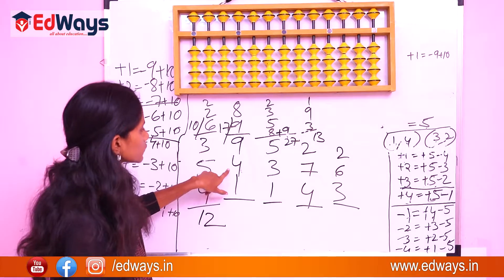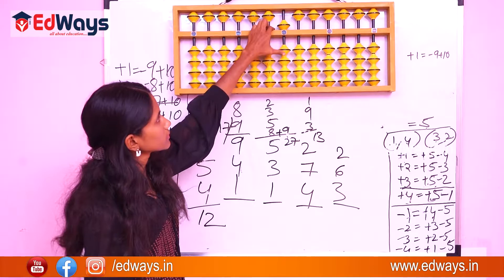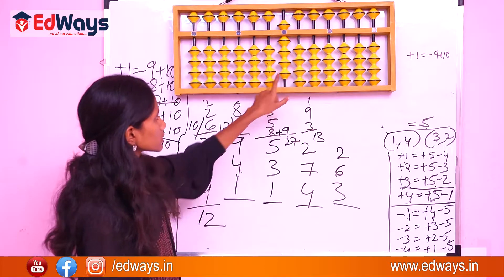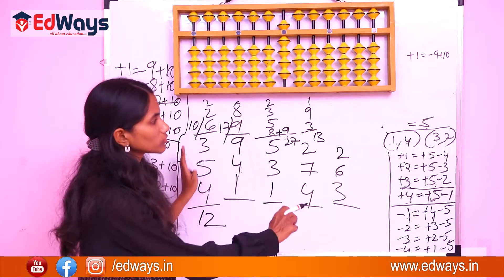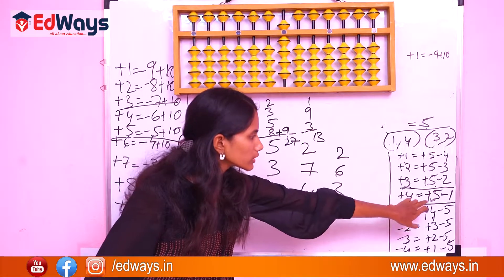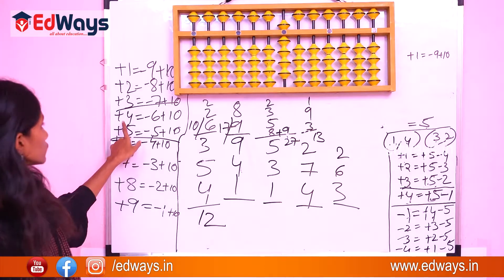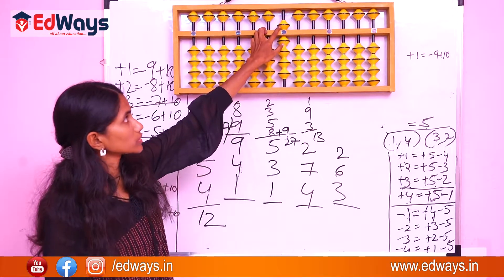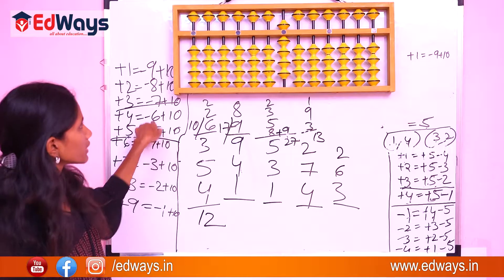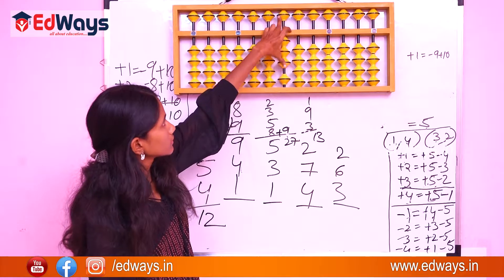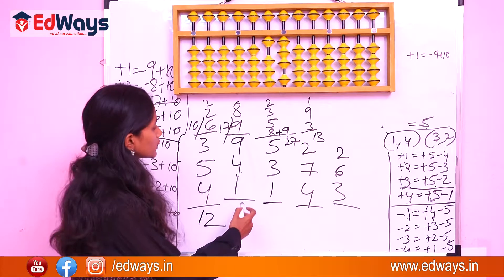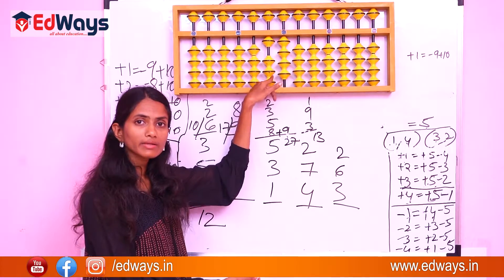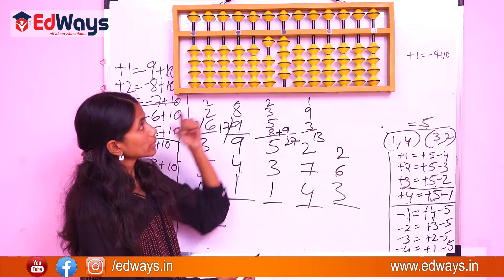Example: 9 plus 4 plus 1. Represent 9 as 5, 6, 7, 8, 9. Now add 4: we have two formulas — 4 equals plus 5 minus 1, or 4 equals minus 6 plus 10. Plus 5 minus 1 is not available, so we use tens complement: subtract 6 and add 10. That gives 13. Then add 1 directly — it is available. The answer is 14.